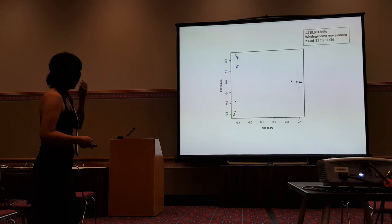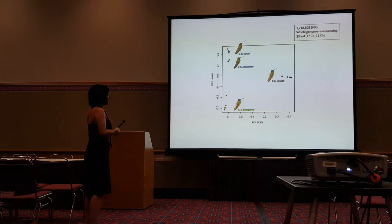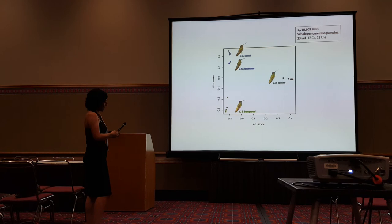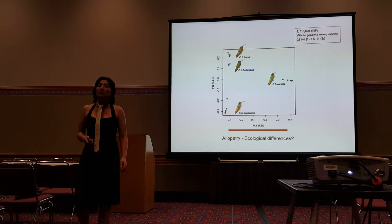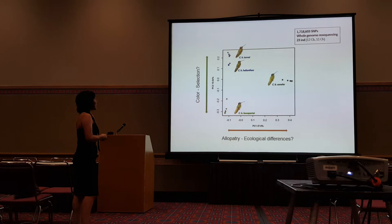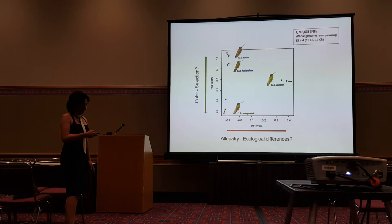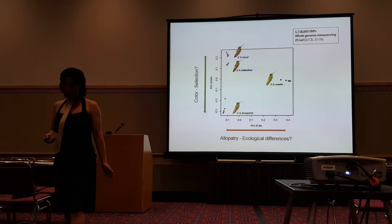This could only happen if there is enough selection to counteract the homogenizing effect of migration. When we do a PCA analysis of all the SNPs — almost two million SNPs from the whole genome resequencing — we can separate the groups very well. The first principal component seems to be related to the allopatry of the subspecies Concita compared to the others, possibly related to ecological differences. The second principal component shows separation of subspecies mainly by coloration: at the bottom the lighter subspecies and at the top the darker ones.